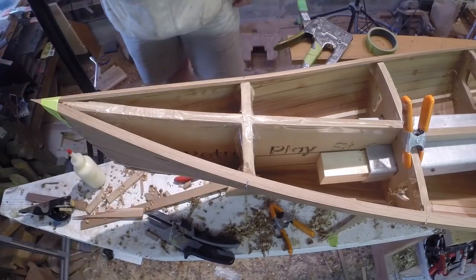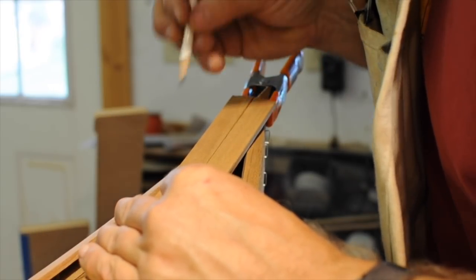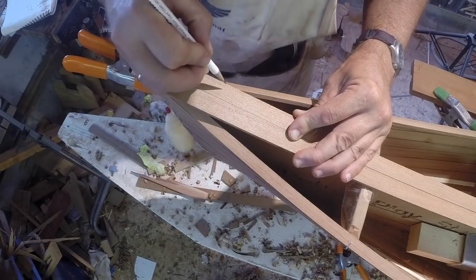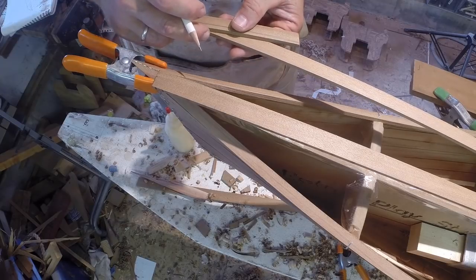The next set of strips follow the centerline. I align a pair of strips with the centerline and mark where the outer edges cross the shear strips. I draw a taper from that mark to the end of the strip.